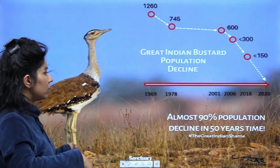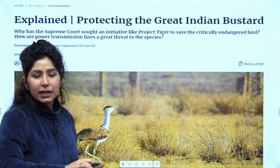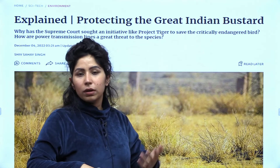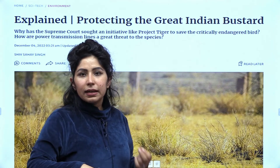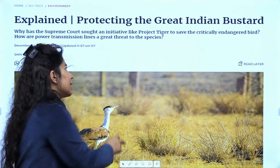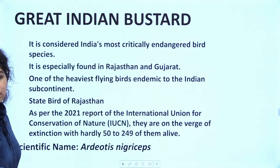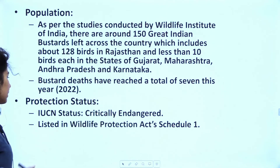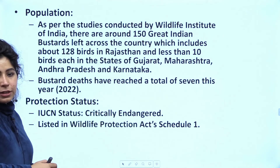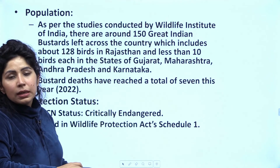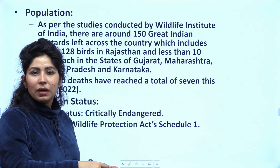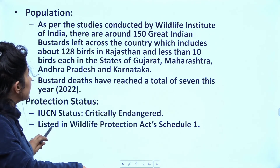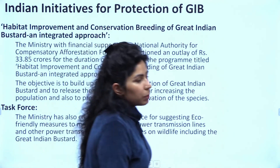The Supreme Court has now asked the government to launch something like Project Tiger, because Project Tiger helped in more than doubling the tiger population when it was launched. A project of the same intensity and level needs to be launched for the Great Indian Bustard. Regarding the conservation status, it falls under the critically endangered category of IUCN and is listed in Schedule 1 of the Wildlife Protection Act. Under the Conservation of Migratory Species (CMS) convention, when the COP was held in India, the Great Indian Bustard represented India at the CMS COP in Gujarat.